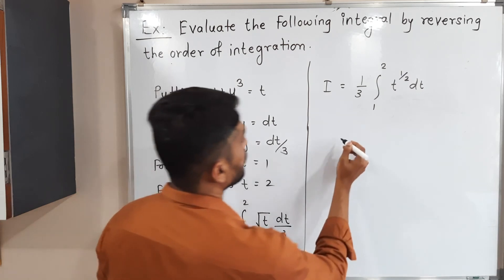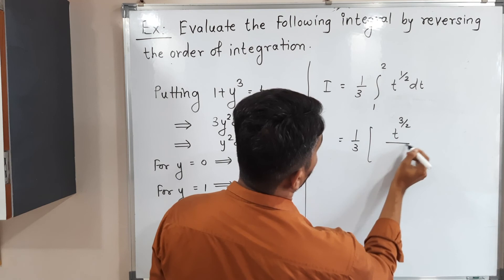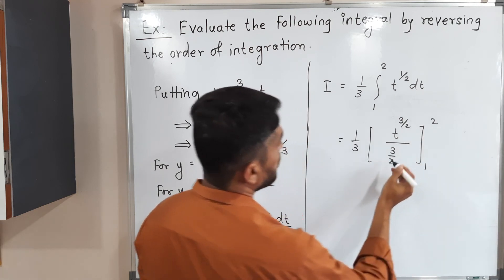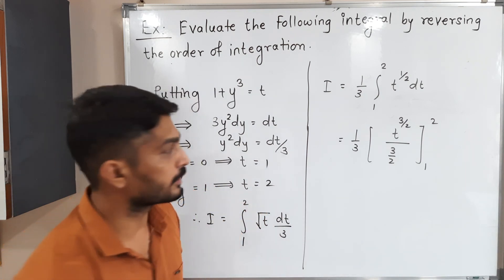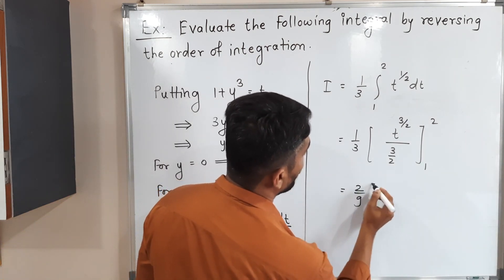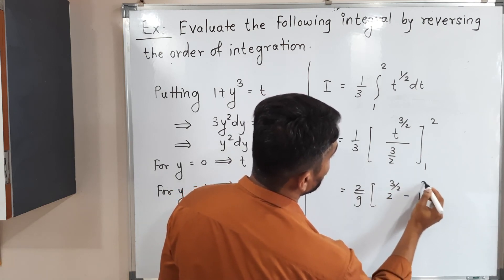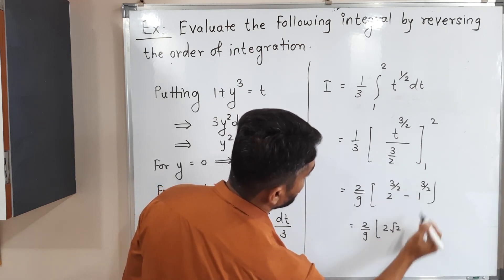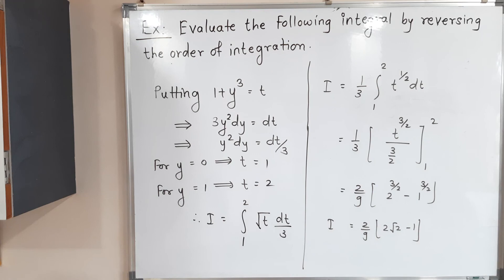Substituting the limits: 2^(3/2) = 2√2 and 1^(3/2) = 1. Therefore I = (2/9)(2√2 − 1). This is the required value of the integral. Thank you.